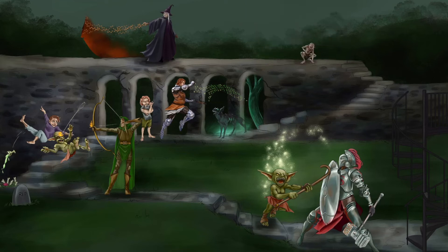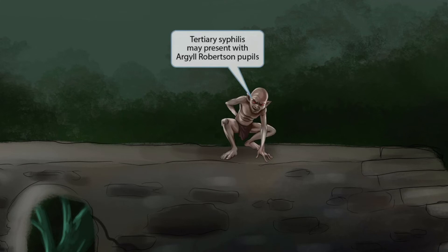An angry creature has been added on the third floor near Ganondolf — this creature has angry, beady-looking eyes and is hyper-focused on the goblet, so even waving your hand in front of him probably wouldn't make him blink. These hyper-focused eyes help you remember that tertiary syphilis may present with Argyll Robertson pupils. This describes pupils that will accommodate — reduce in size when focused on a close object — but will not reduce in size in the presence of bright light.